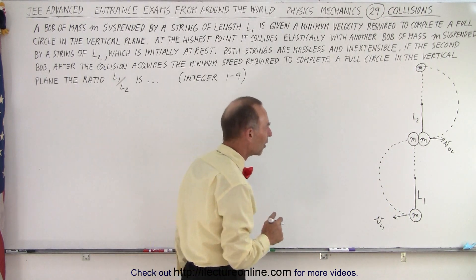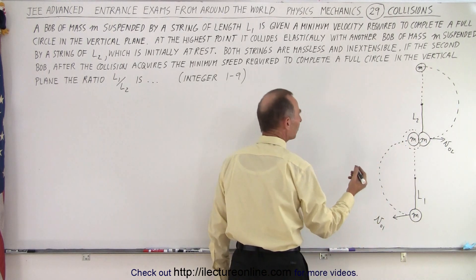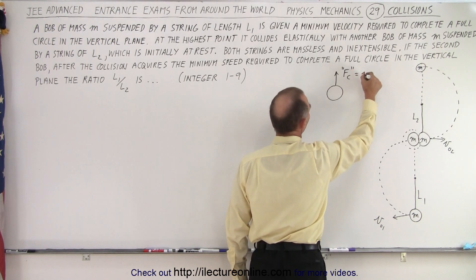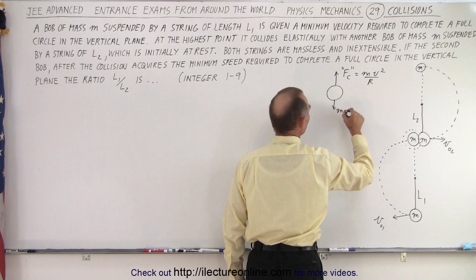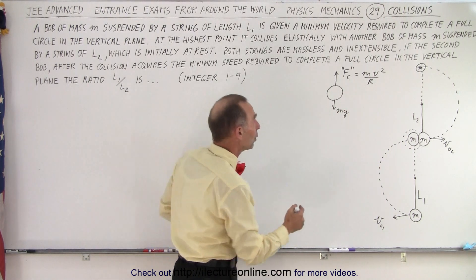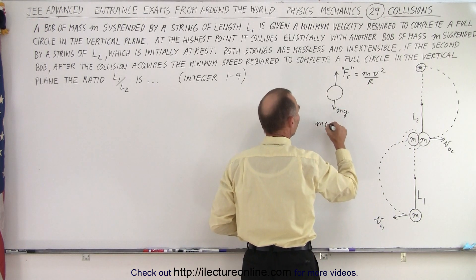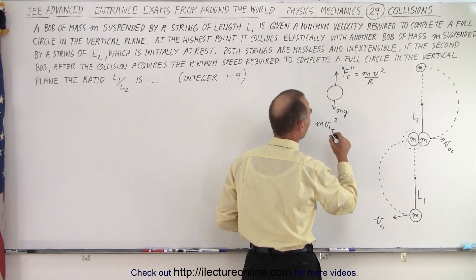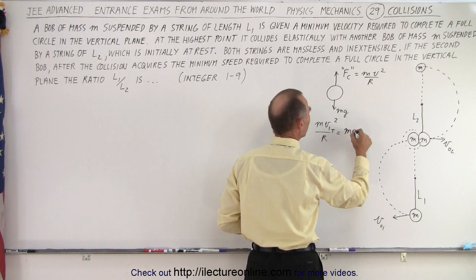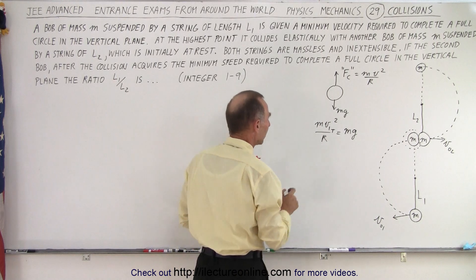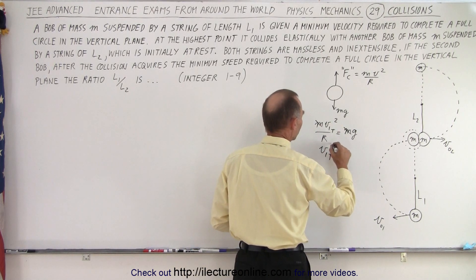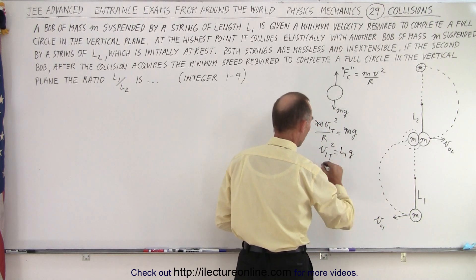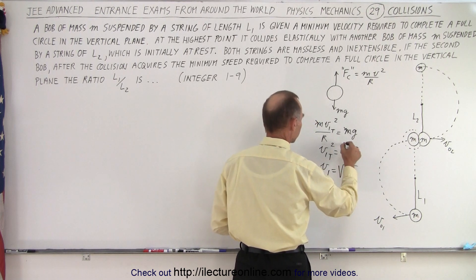At the top of the circle, the centrifugal force pushing upward equals mv² / r, and the weight mg pulls it down. For the string to stay taut, mv²/r must be at least as big as mg. Setting them equal for the minimum condition, the m's cancel out and we get v1_top² = r × g. Since r is the length of the string, we replace it: v1_top² = l1 × g, or v1_top = √(l1·g).